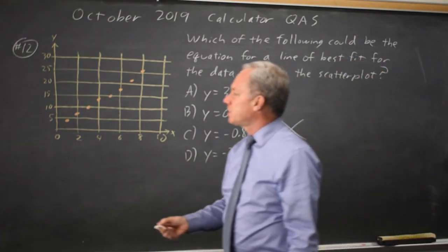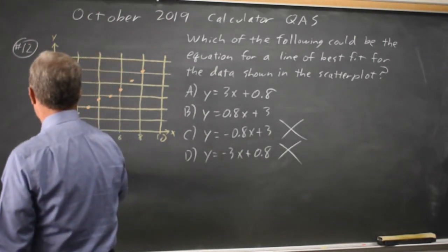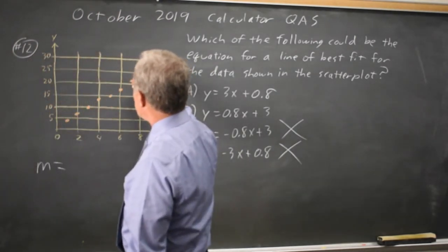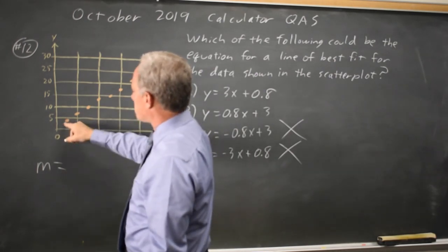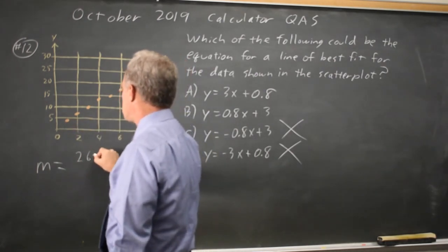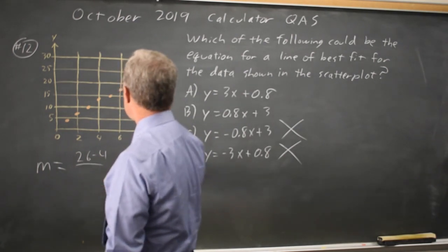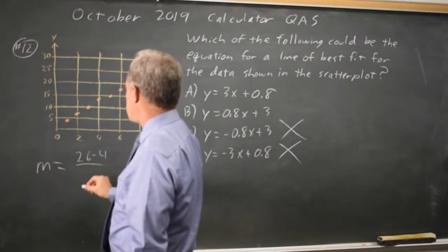And I'm going to find the slope, the difference in y values between the first and last points. That's 26 minus 4 over the difference in x values, which is 8 minus 1.